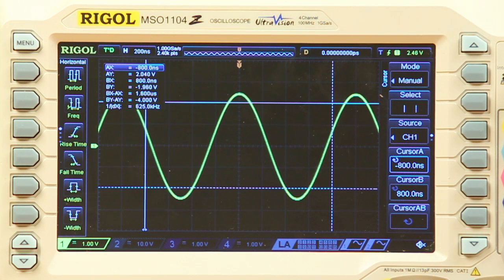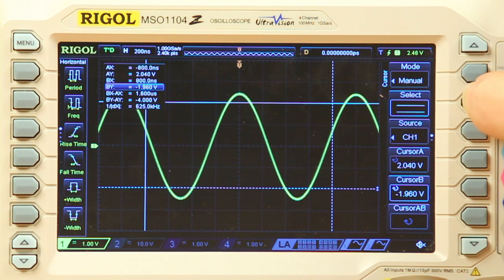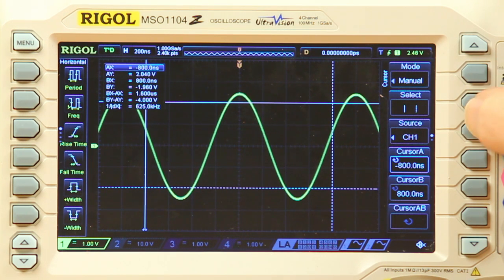These readouts show the cursor position reference to the trigger point in Ground. The select button allows you to change cursors. So, we can go from X cursors to Y cursors. We have our source, Channel 1.